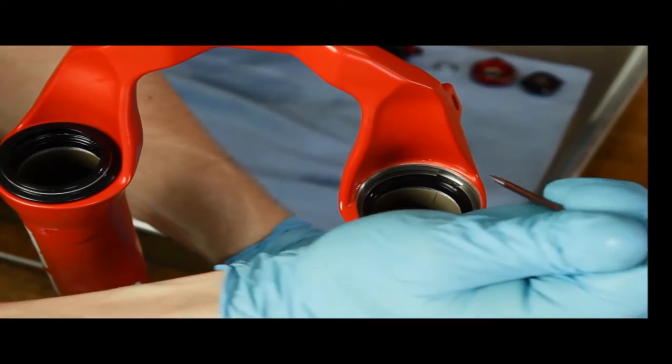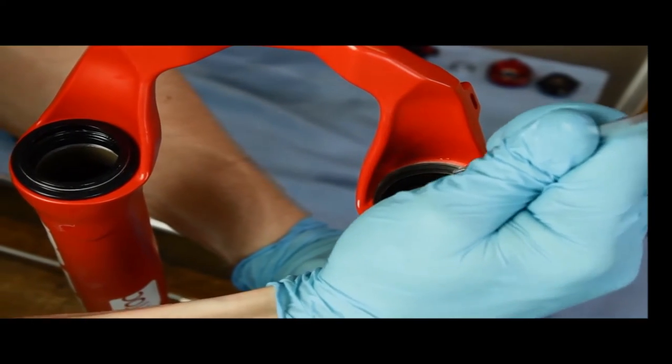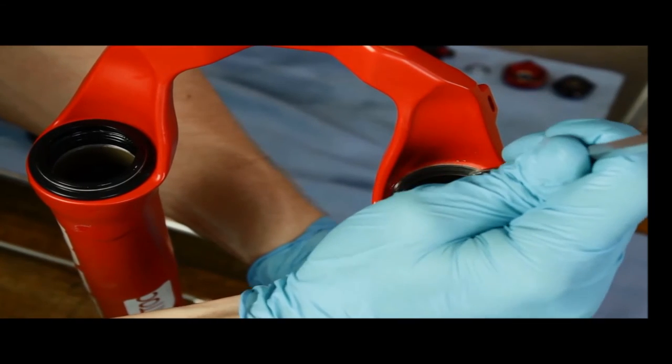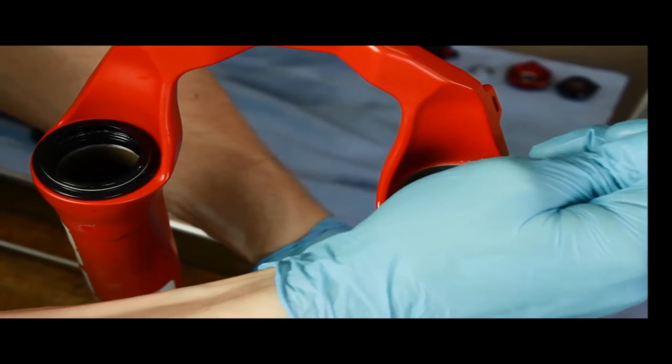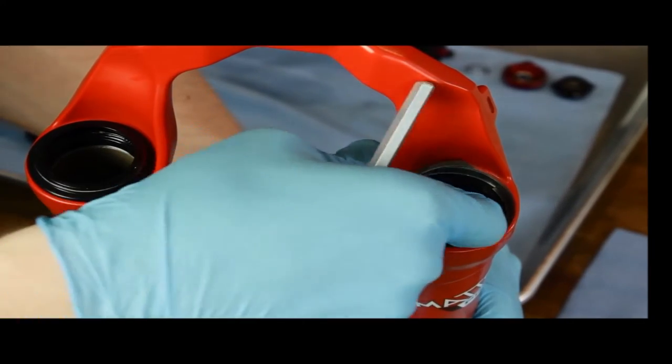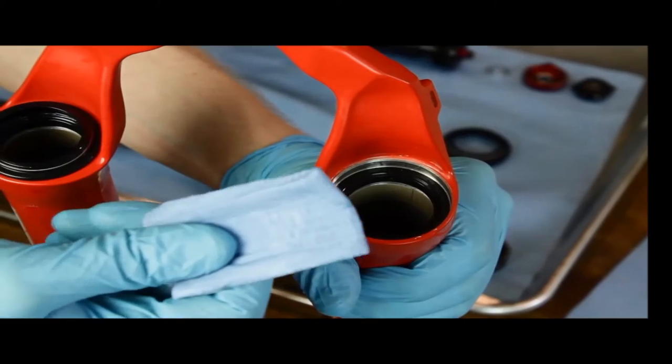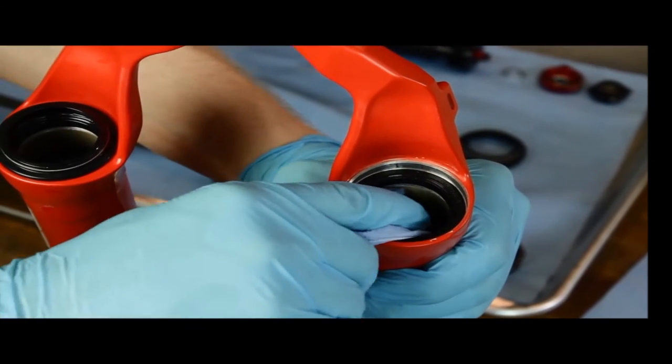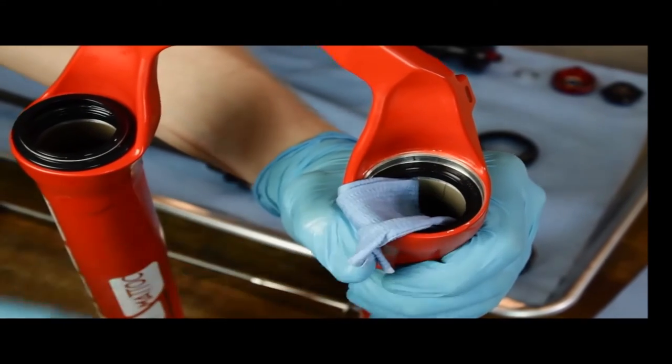Locate the small cutout on the c-clip holding down the oil seal. Use a metal pick to pop the clip out of the groove at this cutout point. You then can slide the pick down the circumference of the clip until it snaps out completely. Use a folded piece of lint-free towel to protect the casting's paint while removing the oil seal.